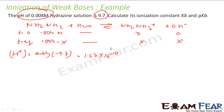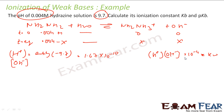If [H⁺] = 1.67 × 10⁻¹⁰, then [OH⁻] = KW / [H⁺] = 10⁻¹⁴ / (1.67 × 10⁻¹⁰), which gives 5.98 × 10⁻⁵.